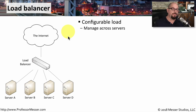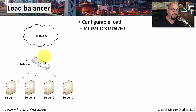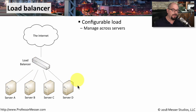This is how we might configure the load using multiple servers. We would bring up server A, server B, server C, and server D and put them all behind a load balancer. Users coming in from other parts of the network simply connect to the load balancer, and the load balancer decides which particular server will handle that particular request.